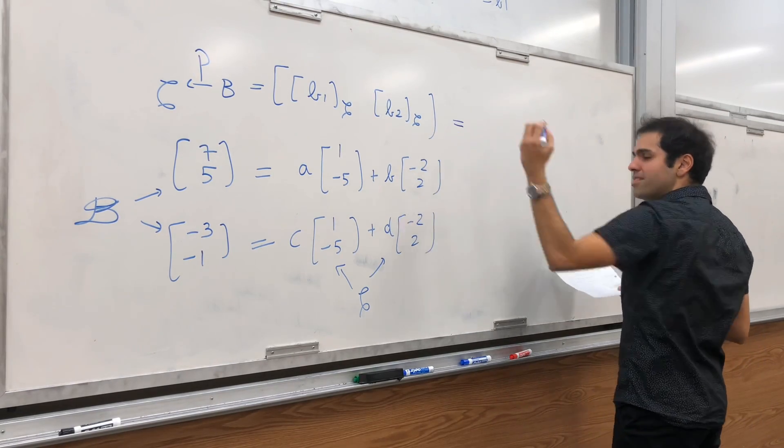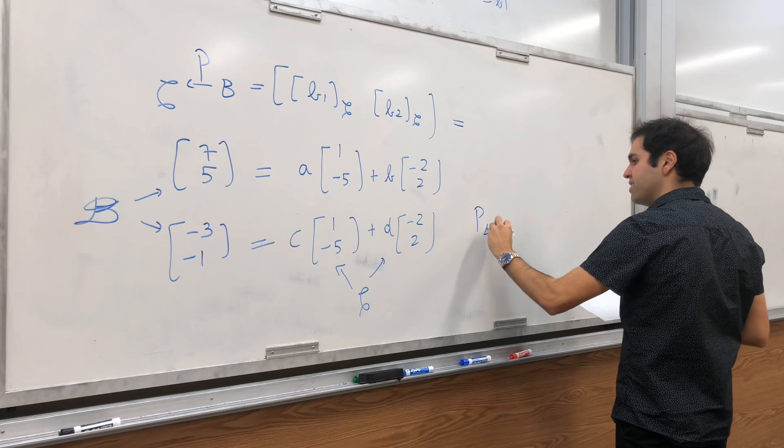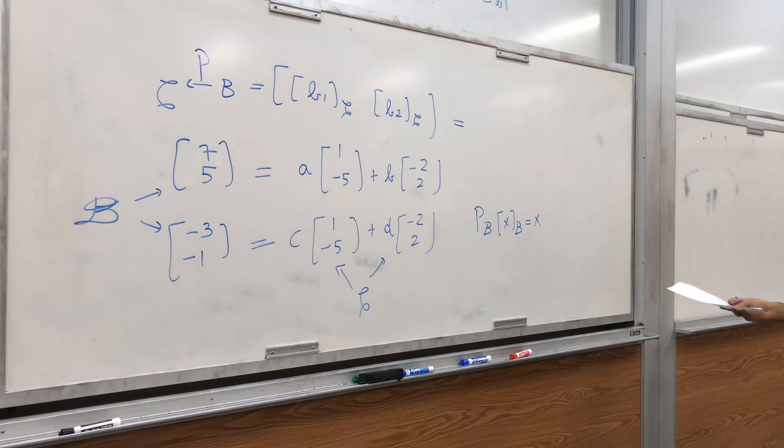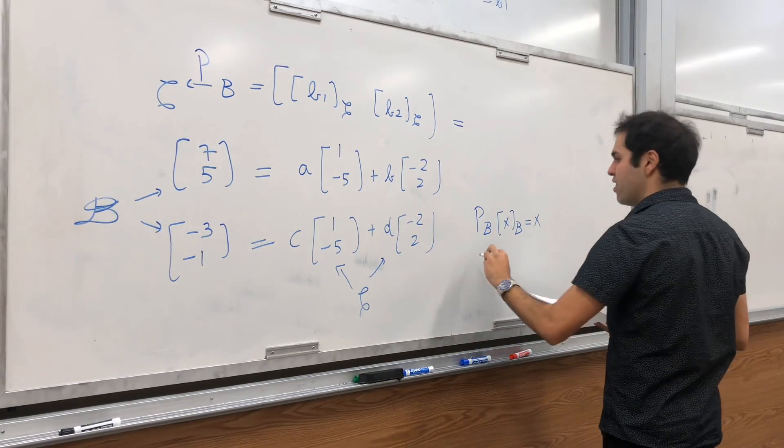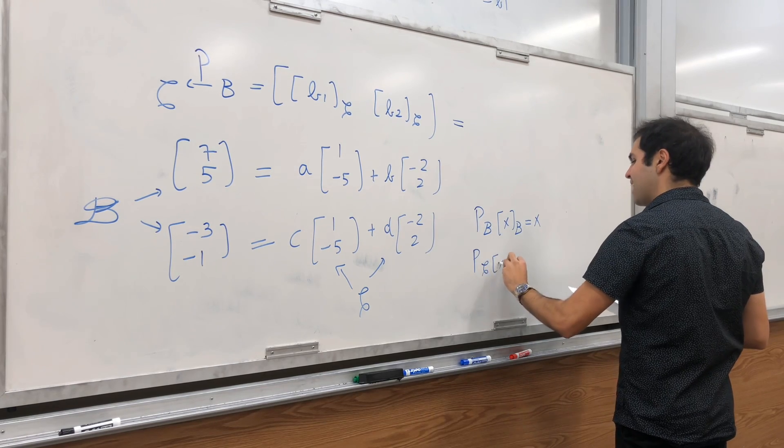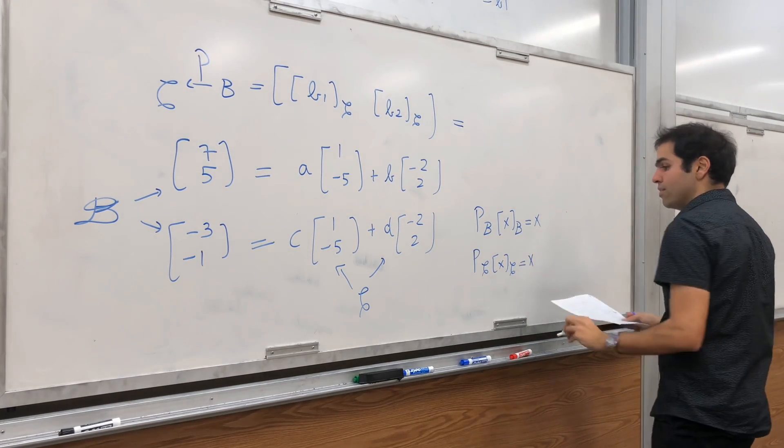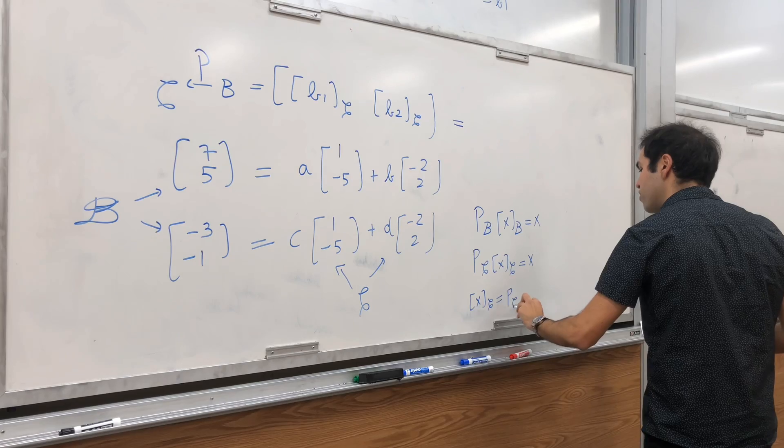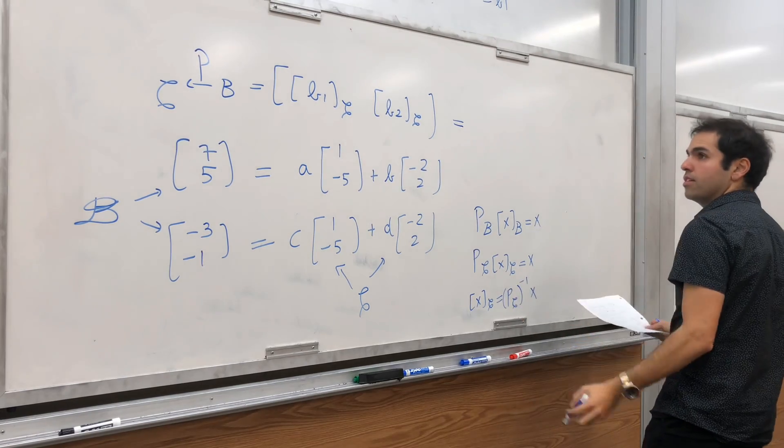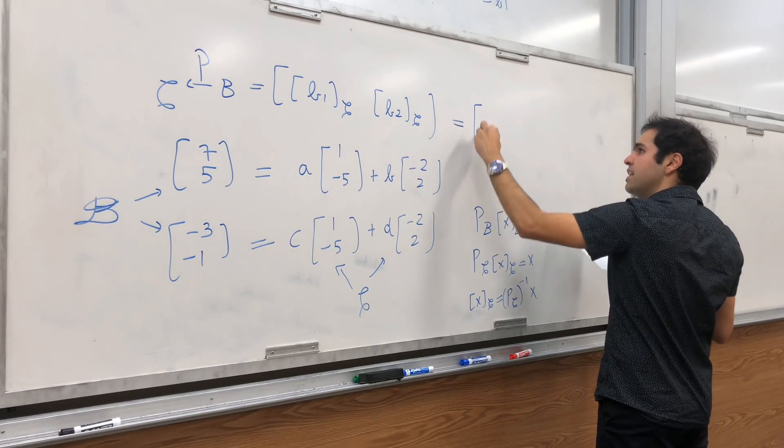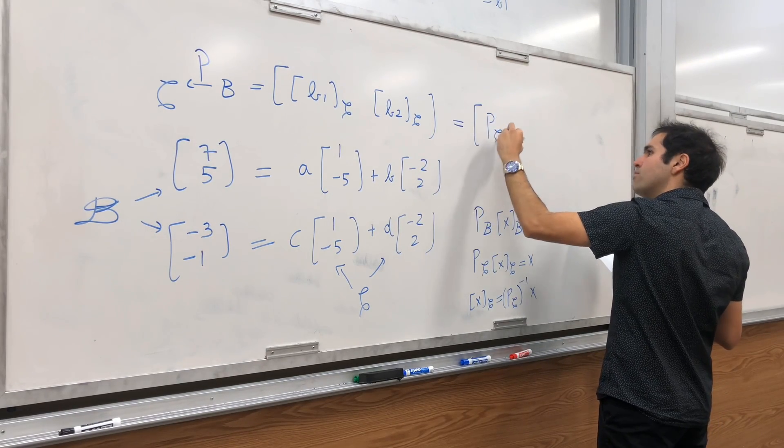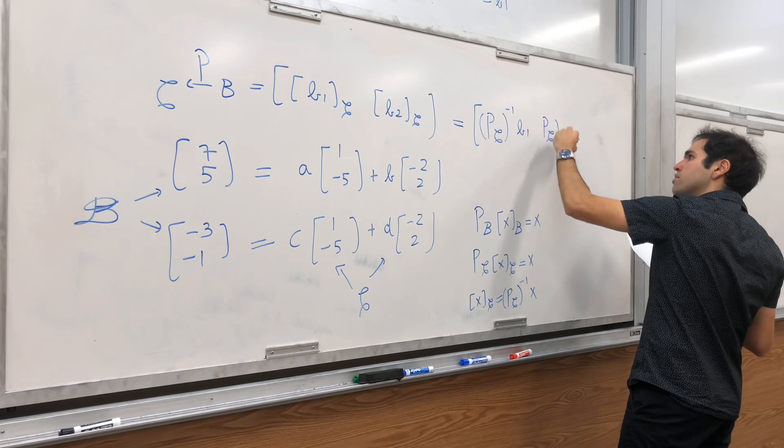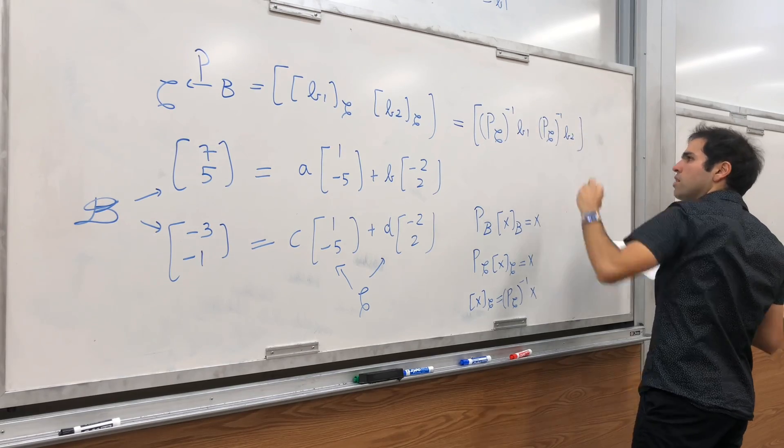Remember, there is this nice property of change of coordinates matrices. PB of XB is just X. And, in particular, you can do this the same thing with C. So, PC, XC is X. In particular, XC is PC inverse of X. So, this thing, what it really is, it's PC inverse of B1 and PC inverse of B2. But, then,